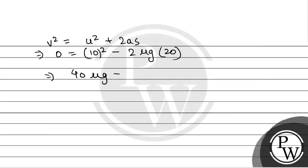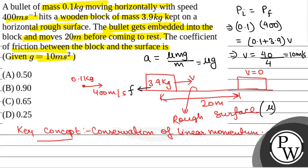mu g is equal to 100 or mu is equal to 100 by 40 g and we have been given g as 10 meter per second square so it will be 100 by 400 that is equal to 0.25. So the coefficient of friction between the block and the surface mu is 0.25 so this will be the final answer. Hope you all understood it well, best of luck.